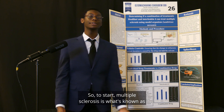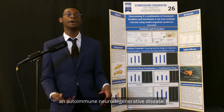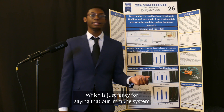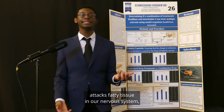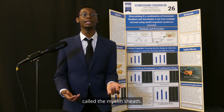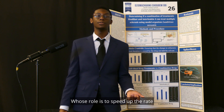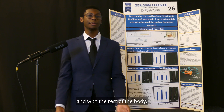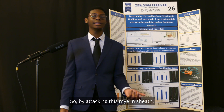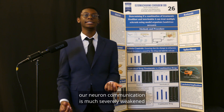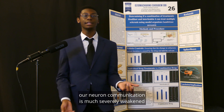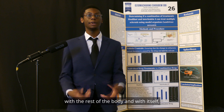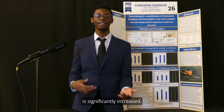Multiple sclerosis is what's known as an autoimmune neurodegenerative disease, which means that our immune system attacks fatty tissue in our nervous system called the myelin sheath, whose role is to speed up the rate at which our neurons can communicate with each other and with the rest of the body. By attacking this myelin sheath, our neuron communication is severely weakened, and the time it takes for our nervous system to communicate with the rest of the body is significantly increased.